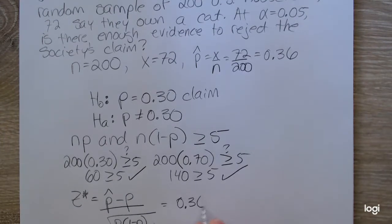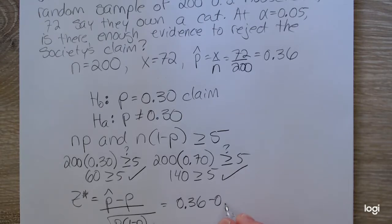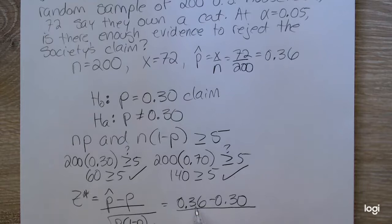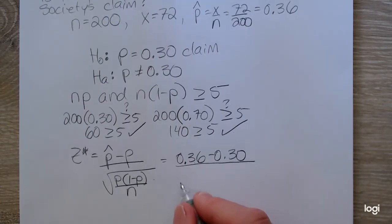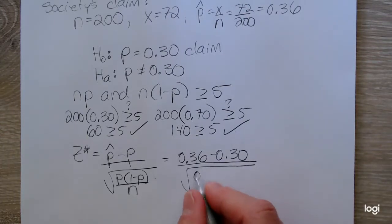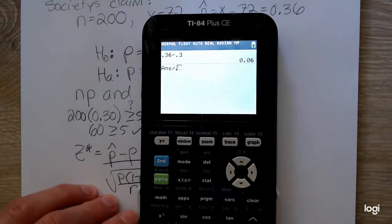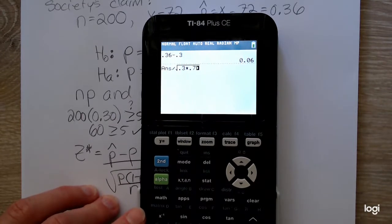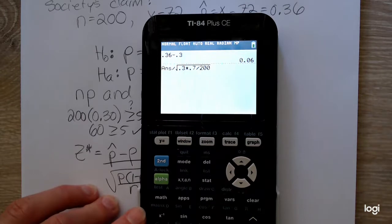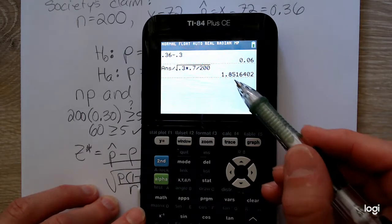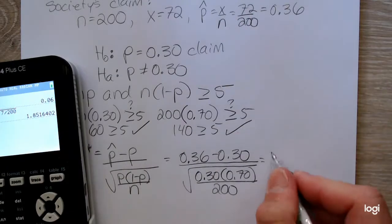All right, so I expect my standardized test statistic to be positive because what we observe is greater than what is claimed. Over the square root of 0.3 times 0.7 over 200. So putting that in my calculator, that will be 0.06 divided by everything under that square root. 0.3 times 0.7 divided by 200. 1.852, rounding to three decimal places.